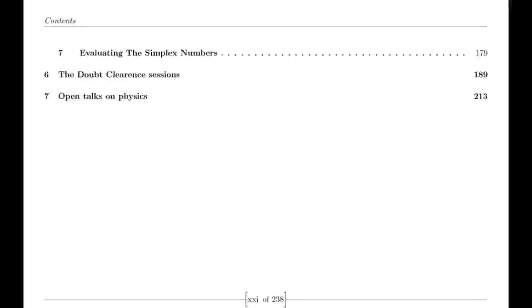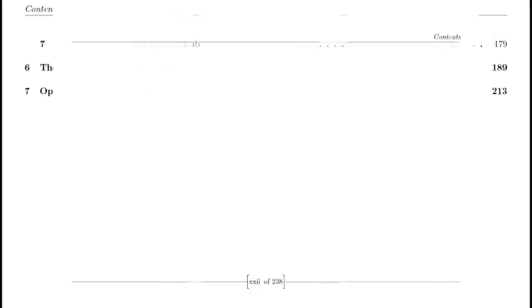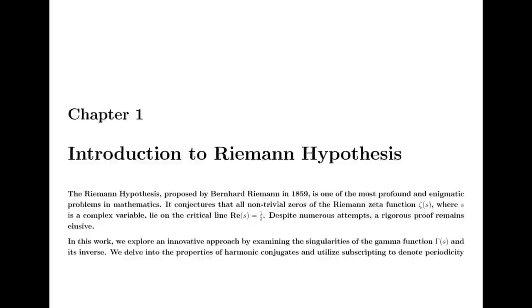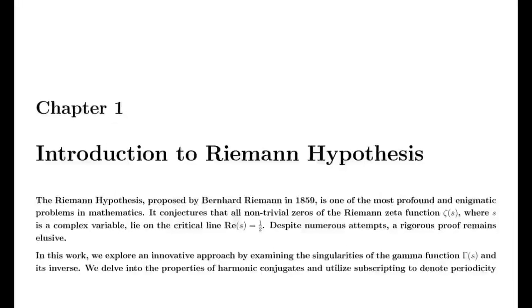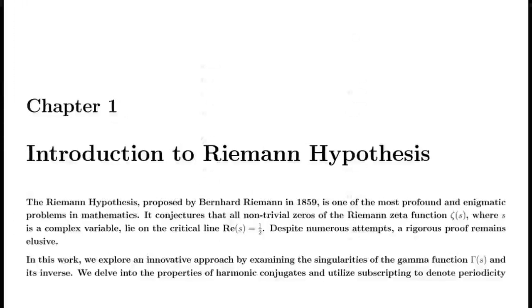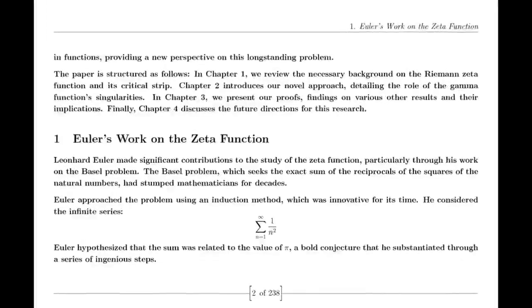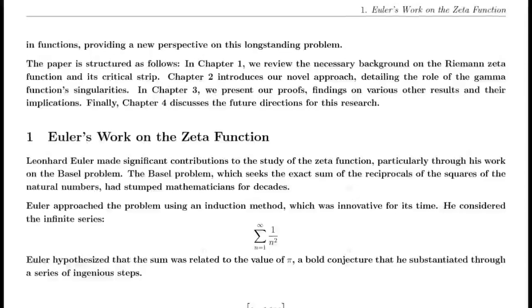Reflection Properties. One of Riemann's major discoveries was the reflection formula for the zeta function. This formula demonstrates a symmetry between the values of the zeta function at s and 1−s. Specifically, it shows that ζ(1−s) can be expressed in terms of ζ(s) using factors involving π, the gamma function, and trigonometric functions. This reflection formula is fundamental to the theory of the zeta function and provides deep insights into its structure.